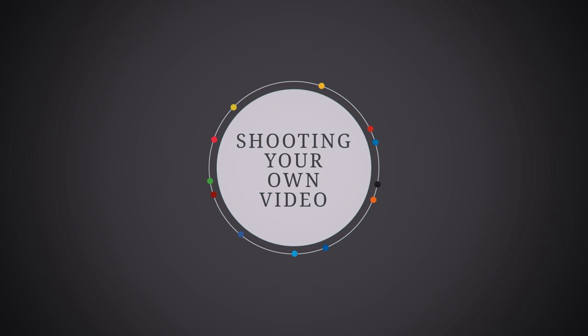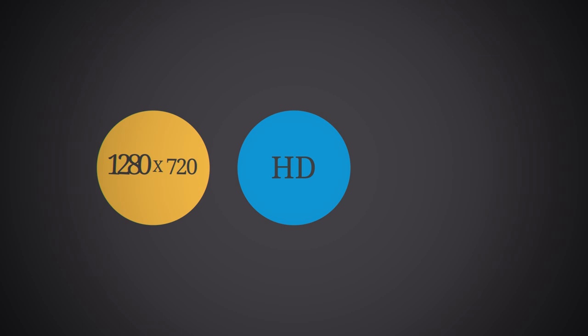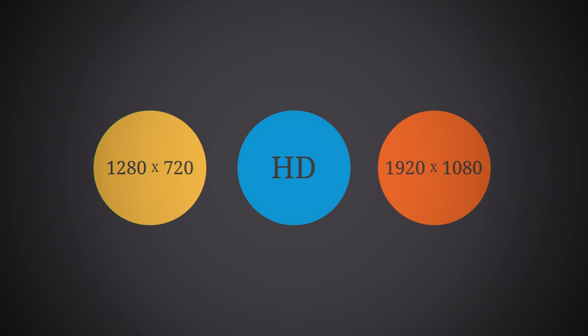If you're shooting your own, there are a few technical aspects that you should consider before you hit record. Most cameras, including smartphones, can now film in HD — this will either be 1280 by 720 or 1920 by 1080. If you have the choice, always choose the highest resolution possible.